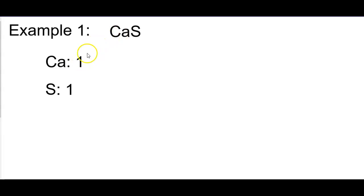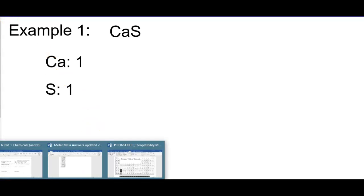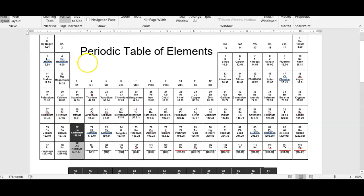Here we have one calcium and one sulfur. There are no numbers after them, so we assume there to be one. Then you're going to look up their number on the periodic table. Here is our periodic table that we have in class. You can see that calcium — you're going to use this number right down here, the 40.08. And then 32.07 for sulfur.